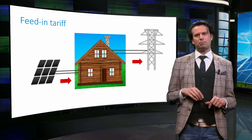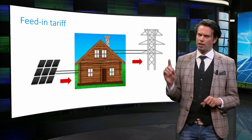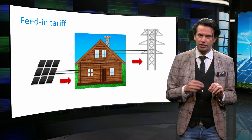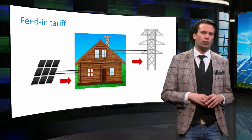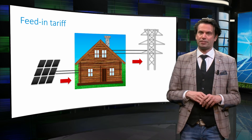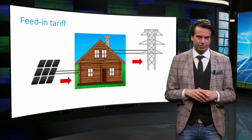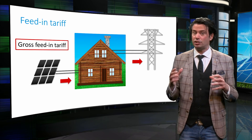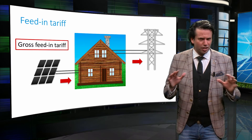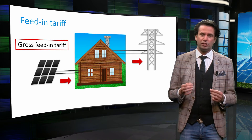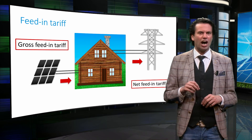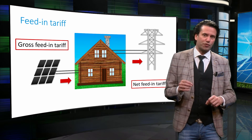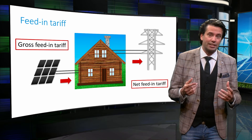Let us briefly discuss the concept of feed-in tariffs in PV systems. The feed-in tariff is the rate that a consumer is paid for the electricity that a grid-connected PV system contributes to the local grid. There are two kinds of feed-in tariffs, namely the gross and net tariff. The gross feed-in tariff is the amount paid for all the electricity generated by the PV system, regardless of the electricity consumption of the PV system owners. The net feed-in tariff is a higher rate, paid for the surplus electricity fed into the grid after subtracting the domestic consumption.